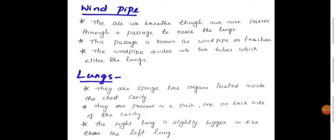Now, lungs: They are sponge-like organs located inside the chest cavity. Already we discussed this. They are present in a pair, one on each side of the cavity. The right lung is slightly bigger inside than the left lung.